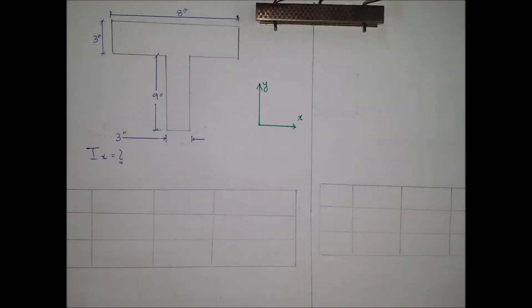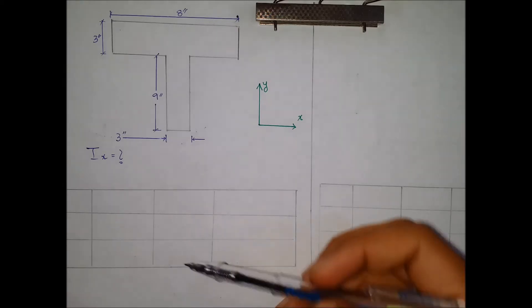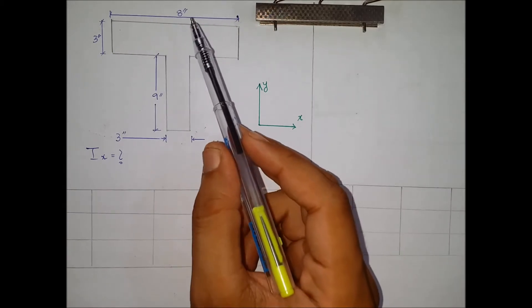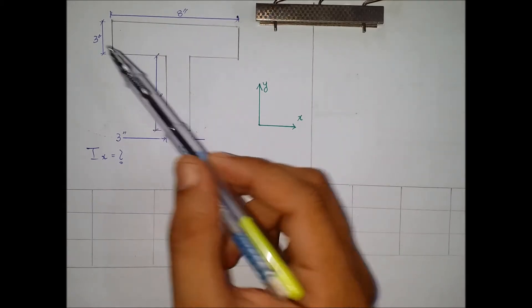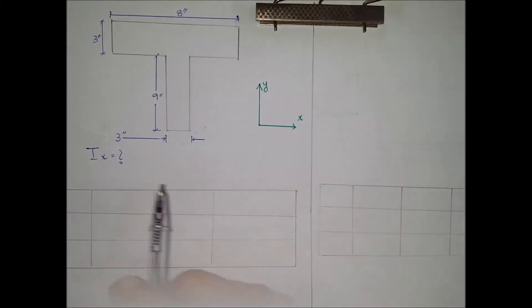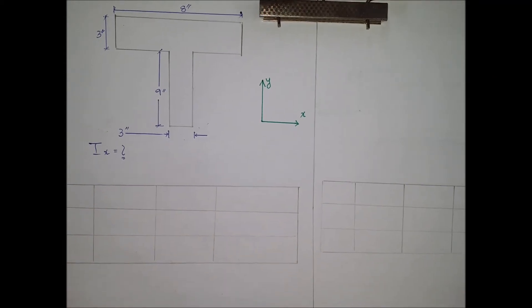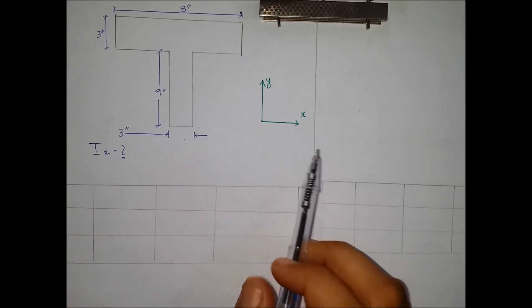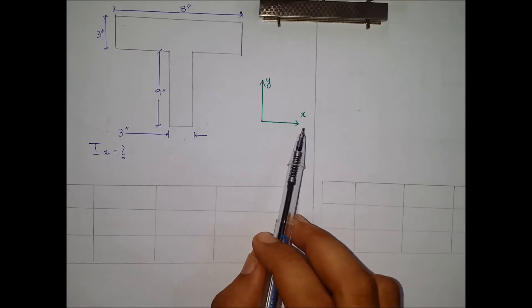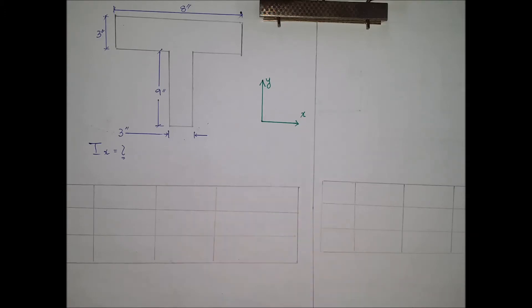Welcome to the first example of calculating moment of inertia of a composite shape. The following shape is composed of two rectangles, that is a T-shape cross-section. The dimensions are 8 by 3 and 9 by 3. We are required to find the moment of inertia about the x-axis for the given shape. The axes are given as x and y.